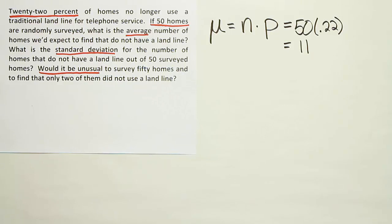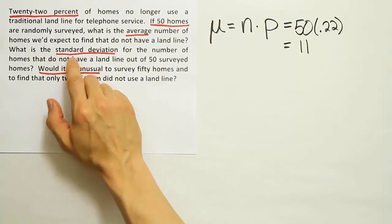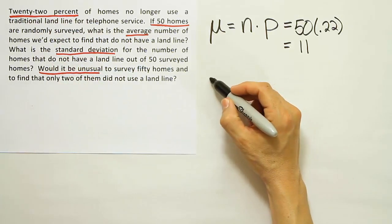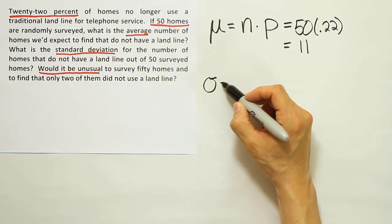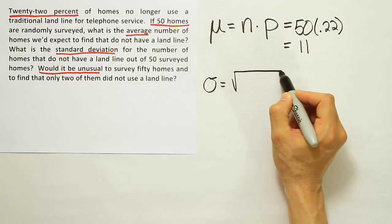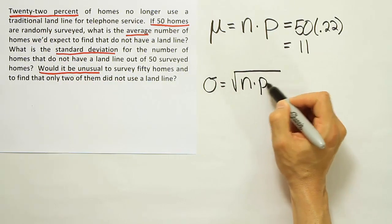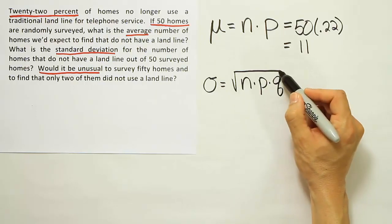Now from here, what you want to do next is to actually go on to say what's the standard deviation? If you know it's binomial, you're going to fill in the following formula: sigma is equal to the square root of n times p times q.